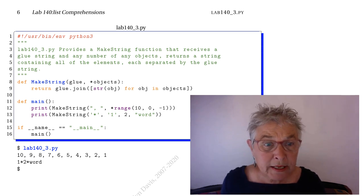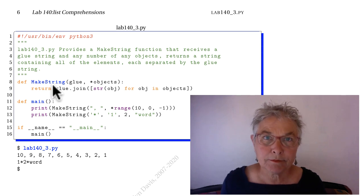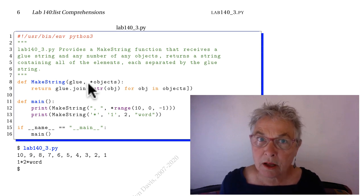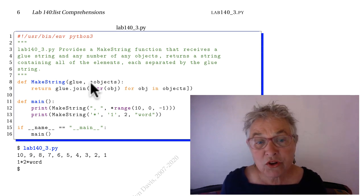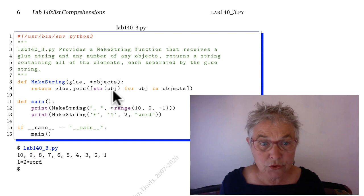140 underscore 3, you were to make a make string function. It takes in a string and any number of objects, Python objects. Well, when you get a Python object and you don't know what it is, you can always make a string out of it and you need to.